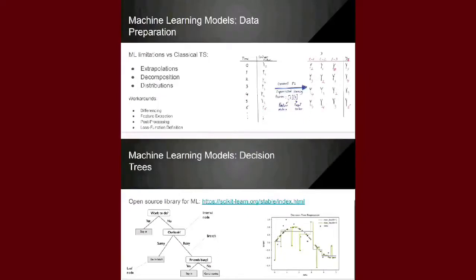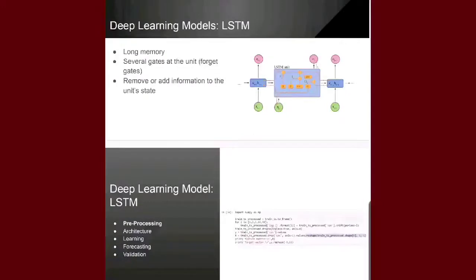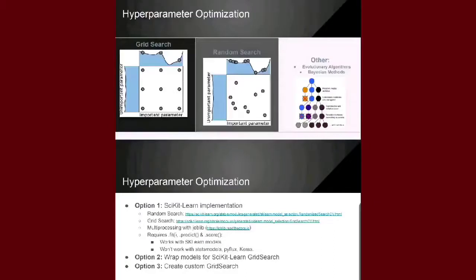It is well known that while temporal relationships in the data exist, they are difficult to analyze and predict accurately due to the nonlinear trends and noise present in the series. Feed-forward neural networks have been a popular way of learning the dependencies in the data, using multiple inputs from the past to make a prediction for a future time step.